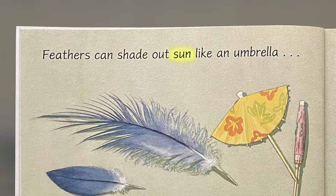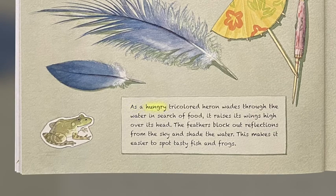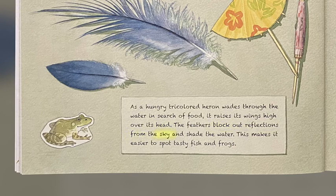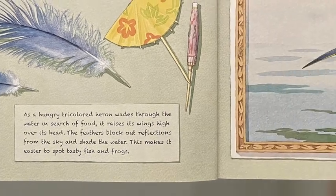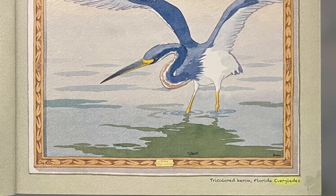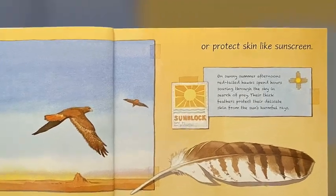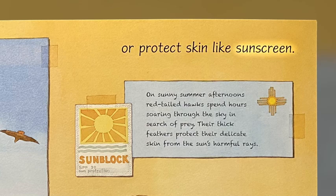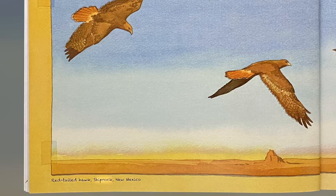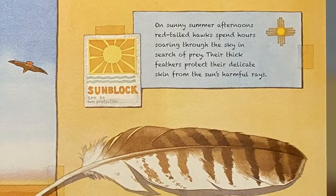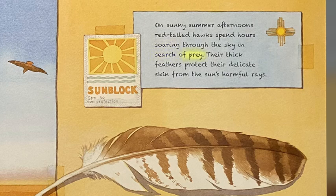Feathers can shade out sun like an umbrella. As a hungry tricolored heron wades through the water in search of food, it raises its wings high over its head. The feathers block out reflections from the sky and shade the water, making it easier to spot tasty fish and frogs. Or protect skin like sunscreen. On sunny summer afternoons, red-tailed hawks spend hours soaring through the sky in search of prey. Their thick feathers protect their delicate skin from the sun's harmful rays.